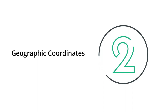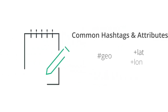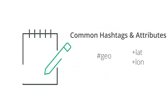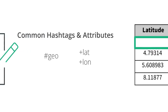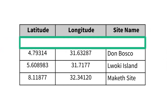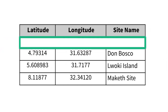In addition to administrative division data, humanitarian spreadsheets often have geographic coordinates for specific locations. For this type of geographic data, we use the hashtag GEO and the attributes LAT and LON for latitude and longitude. In our example, we would use hashtag GEO plus LAT for the first column and hashtag GEO plus LON for the second.